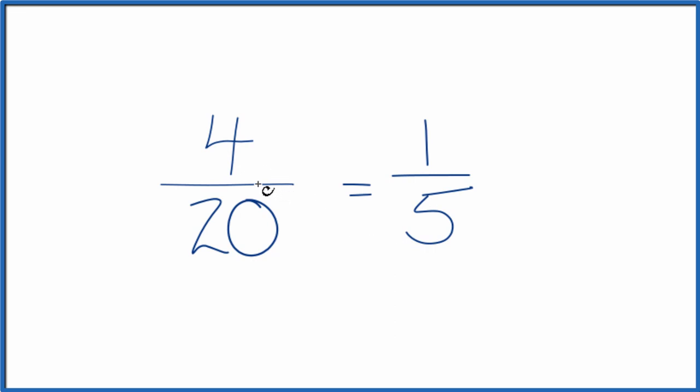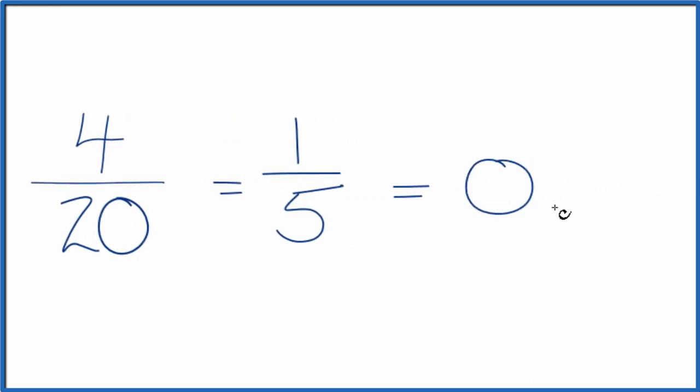And 1 fifth, that's an equivalent fraction for 4 20ths. If you divide 4 by 20 or 1 by 5, you get the decimal 0.2. That's because these are equivalent.